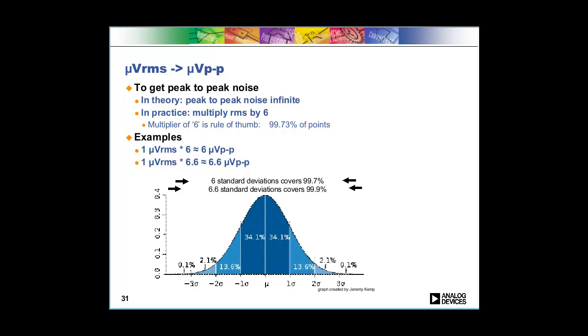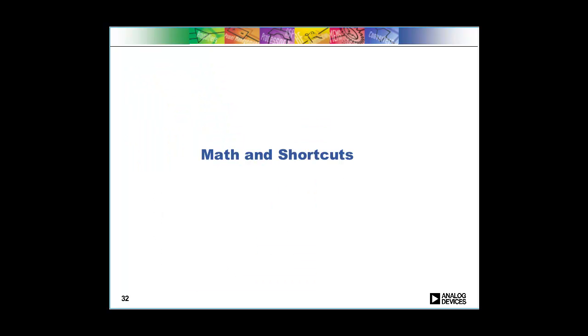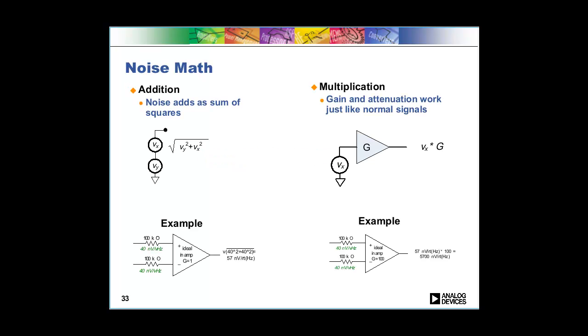Let's talk about how to do noise math. The most important thing to remember when you're combining noise signals is that noise adds as the sum of squares. If you're adding two signals it adds as the sum of squares and then you take the square root.